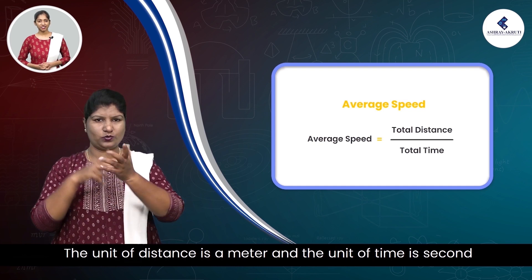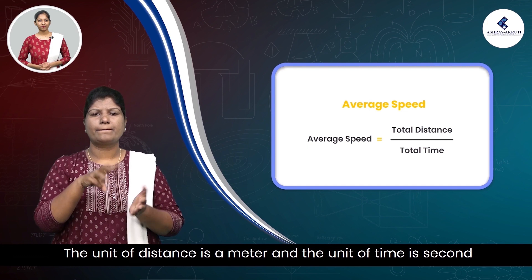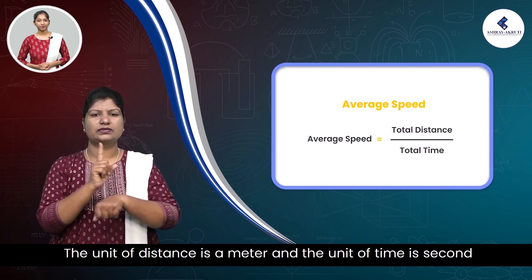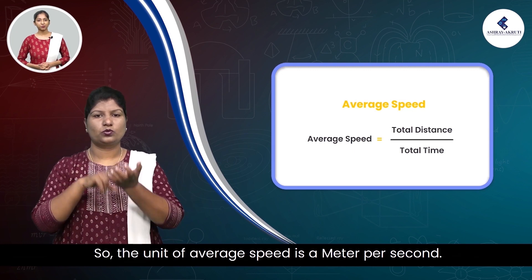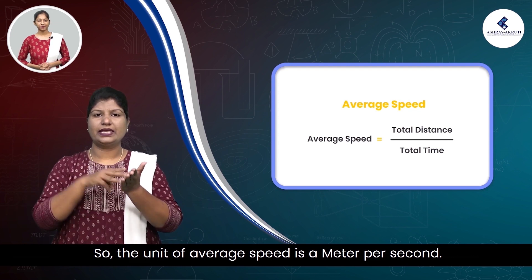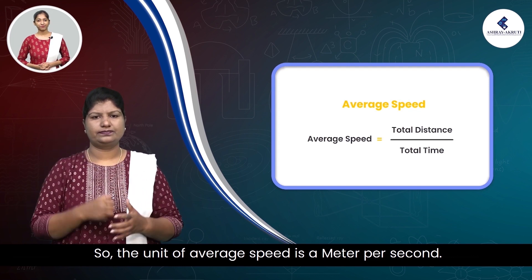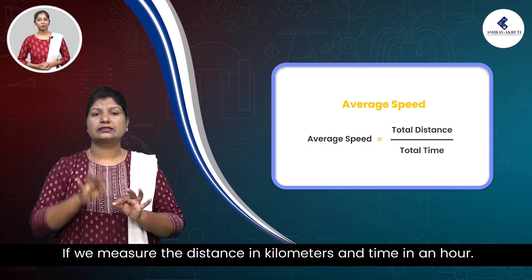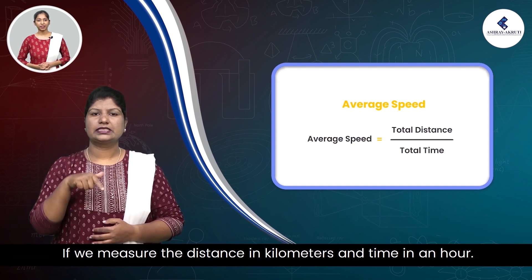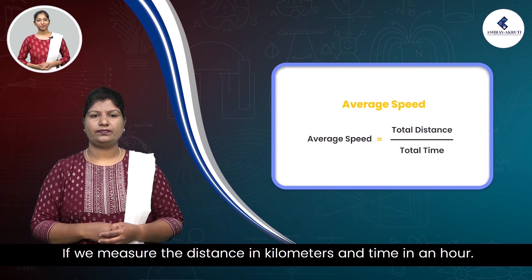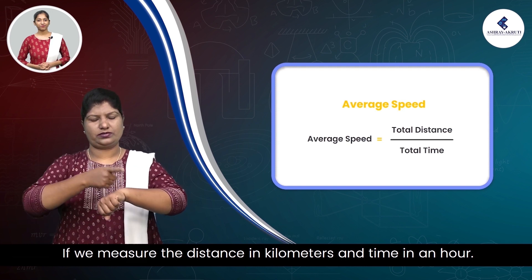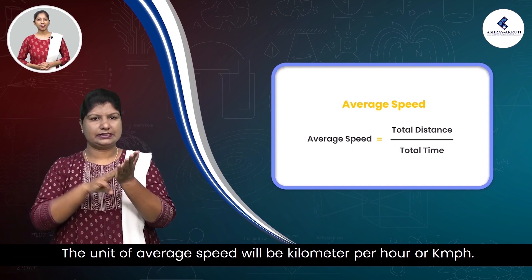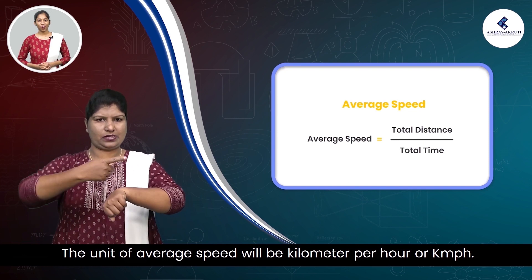Average speed is the distance covered divided by the time taken. The unit of distance is meter and the unit of time is second. So, the unit of average speed is meter per second. If we measure the distance in kilometers and the time in hours, the unit of average speed will be kilometer per hour or kmph.